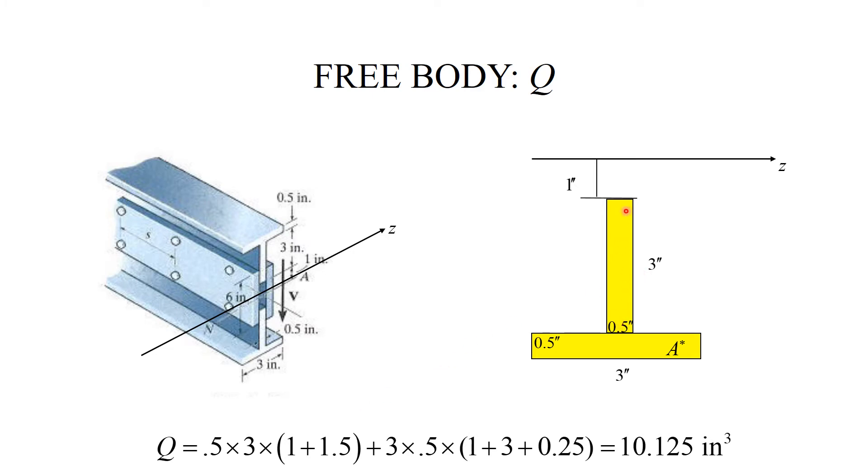I'll start with this rectangle. It is 0.5 times 3, B times H, times the distance from the Z axis to the centroid of the rectangle, which is 1 plus half of 3, which is 2.5. Now for the bottom rectangle, it is 3 times 0.5, and the distance from the Z axis to the centroid is 1 plus 3 plus 0.25, which is half of 0.5. So we get 10.125 inches cubed for Q.